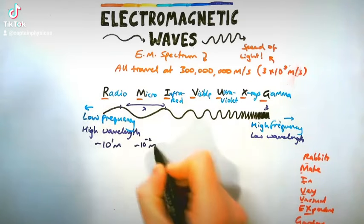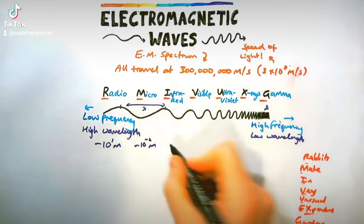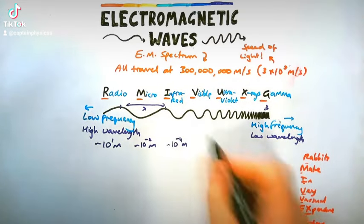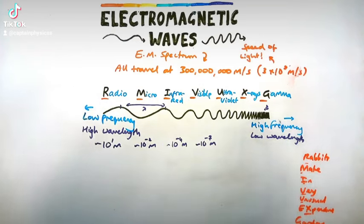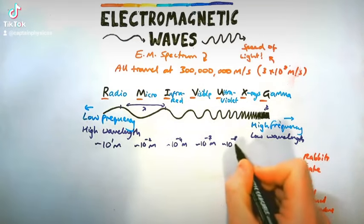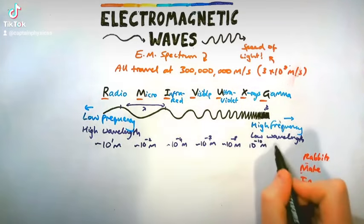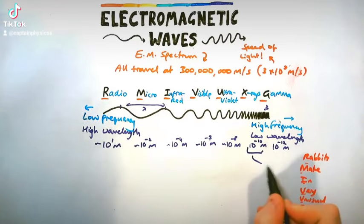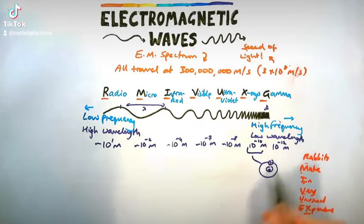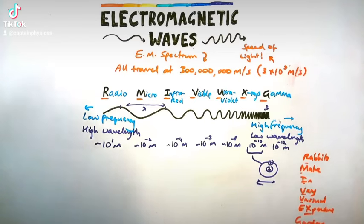The wavelengths, you need to know their rough wavelengths for each part of the spectrum. So radio is about 10 meters, micro is about 0.01, infrared is about 0.0001. I've written them all in standard form because they get really small. Visible light is 10 to the power minus 7 meters. Ultraviolet is 10 to the power minus 8. X-rays and gamma rays even smaller, minus 10 and minus 12.